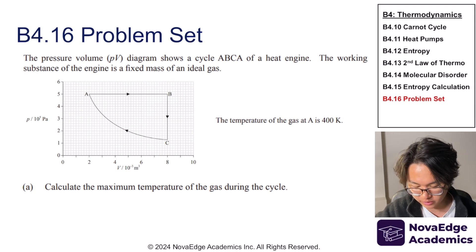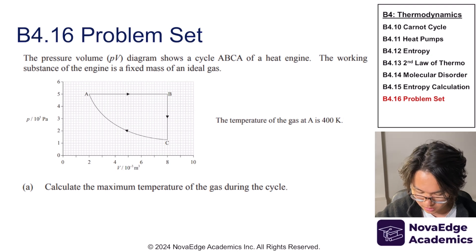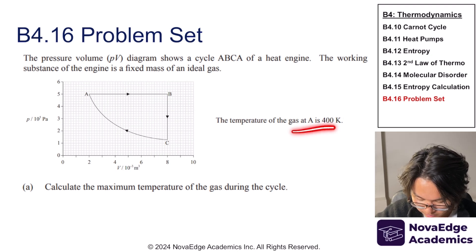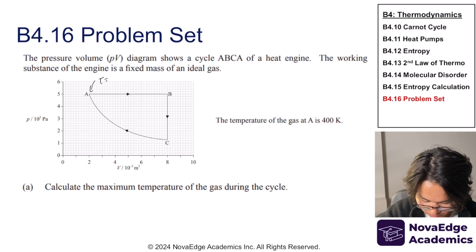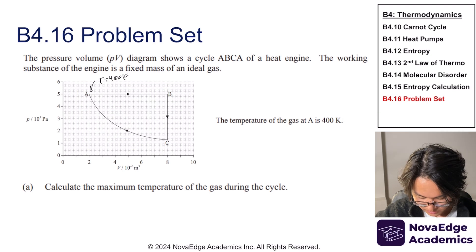Okay, so we're given this PV diagram which shows a cycle of a heat engine from A, B, C, and then to A. We're also given a temperature of the gas at A is 400 Kelvin. So here we know that T is 400 Kelvin. Calculate the maximum temperature of the gas during the cycle. So first is to determine where A, B, or C has a maximum temperature.